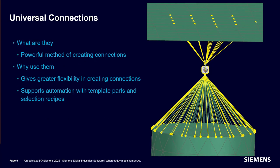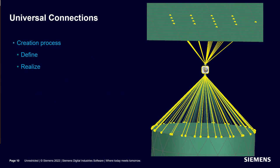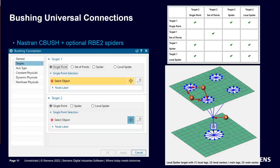Universal connections are the next generation of automation for creating 1D connections and they can leverage selection recipes in their creation. Creating universal connections is a multi-step process involving first defining the connection and then realizing it to create the finite element model connection. Universal connections are supported in other solver environments like Abaqus and Ansys, but today we'll be focusing on their application in the Nastran solver environment.